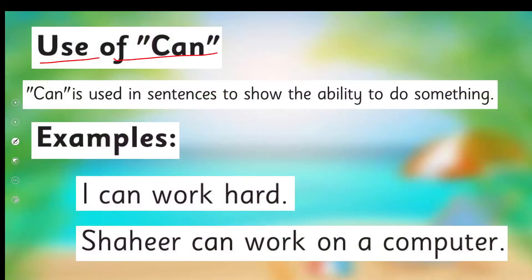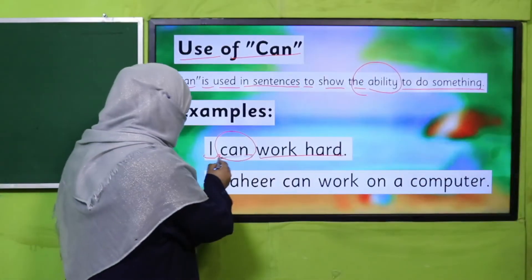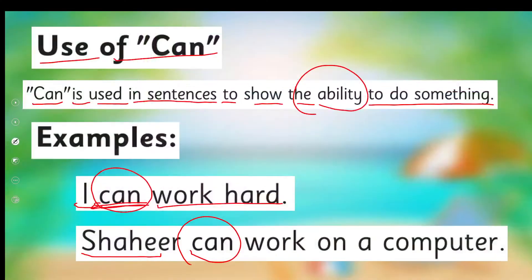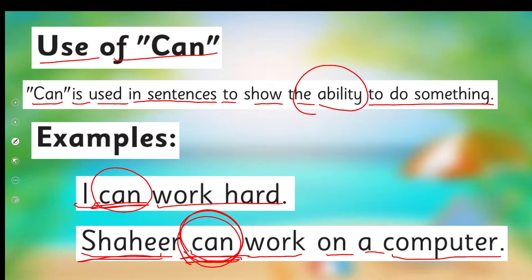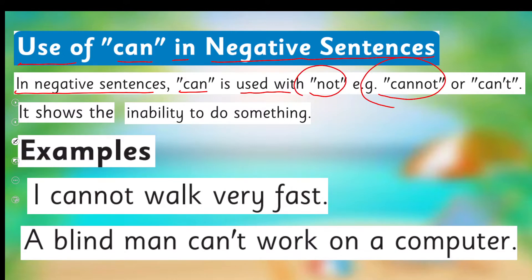The book says: 'can' is used in sentences to show the ability to do something. For example, 'I can work hard' — this is our ability. 'Shaheed can work on a computer' — he has learned it, it is his ability. In negative sentences, 'can' is used with 'not' — 'cannot' or 'can't.' Both show the inability to do something.